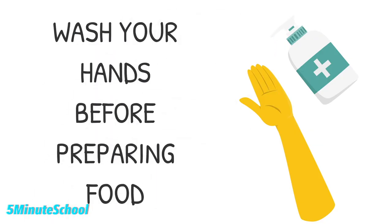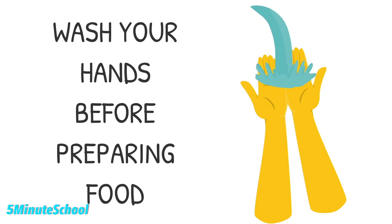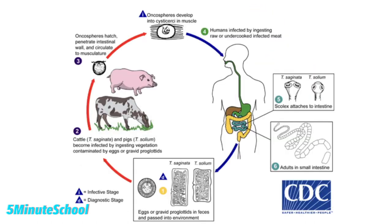It's important to wash your hands with soap and water for at least 30 seconds if you are preparing food. The life cycle of tapeworms has three stages: the egg stage, the immature stage which is also known as the larvae stage, and then the adult stage where the tapeworm can start producing more eggs.